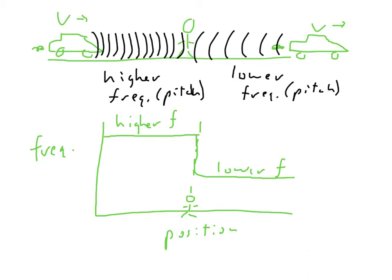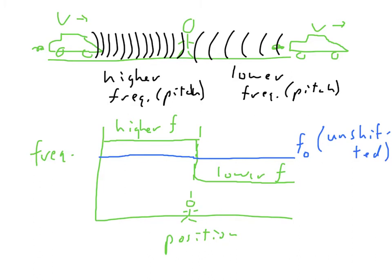What would they hear if they were riding in the car? If they were riding in the car, they would hear whatever the pitch is right in the middle. This would be what we might call F0 or unshifted. This is what they would hear if they were in the car.